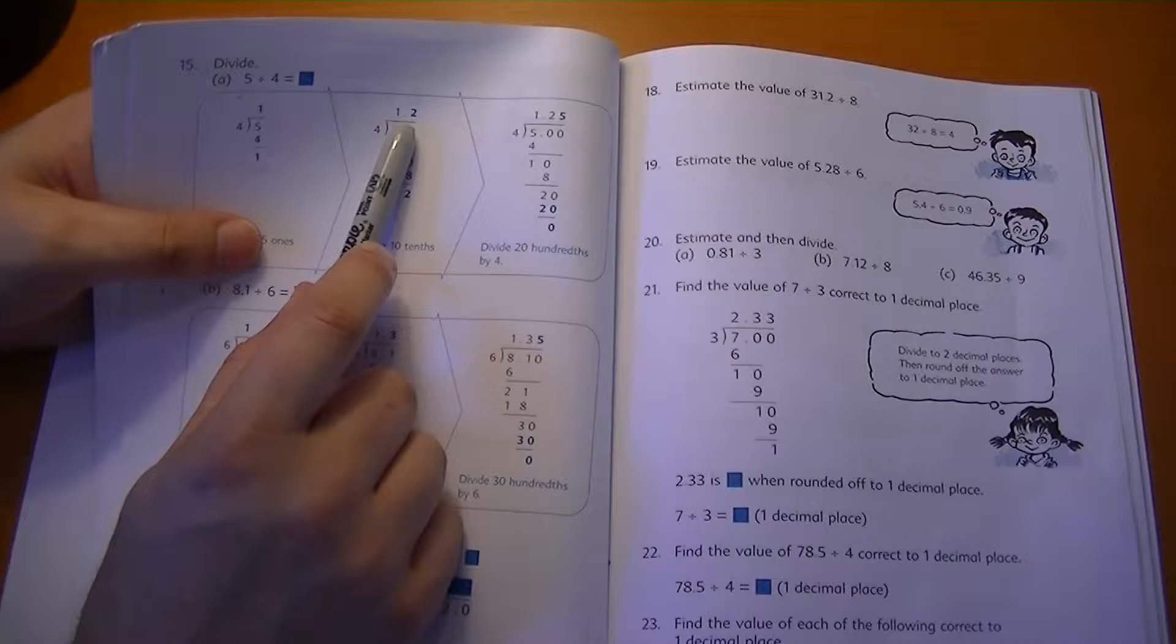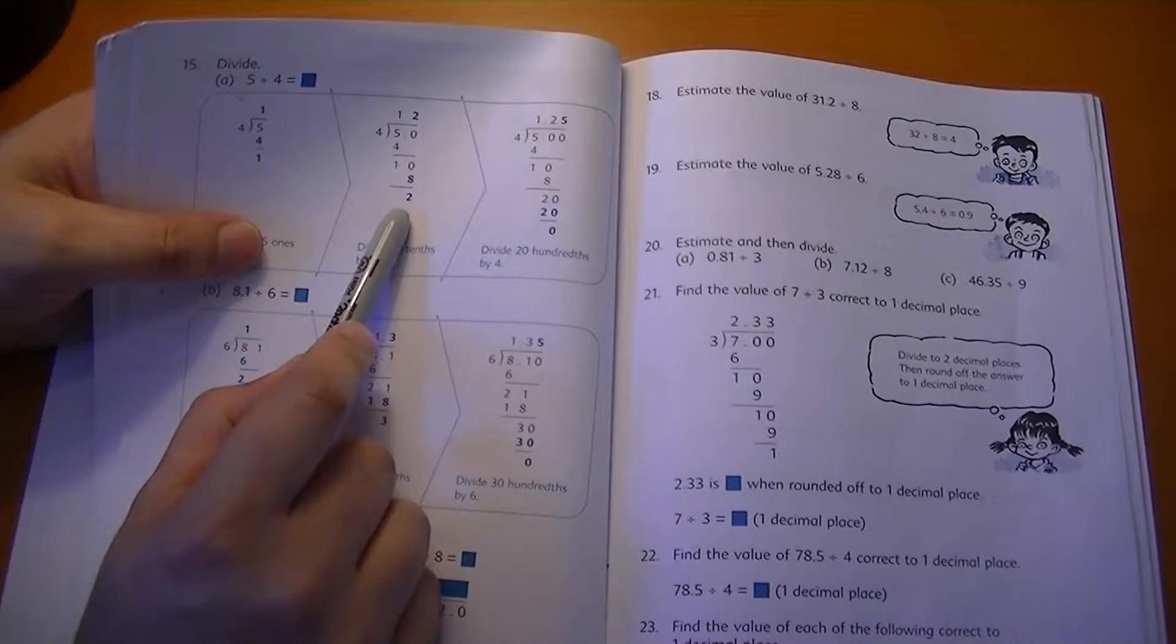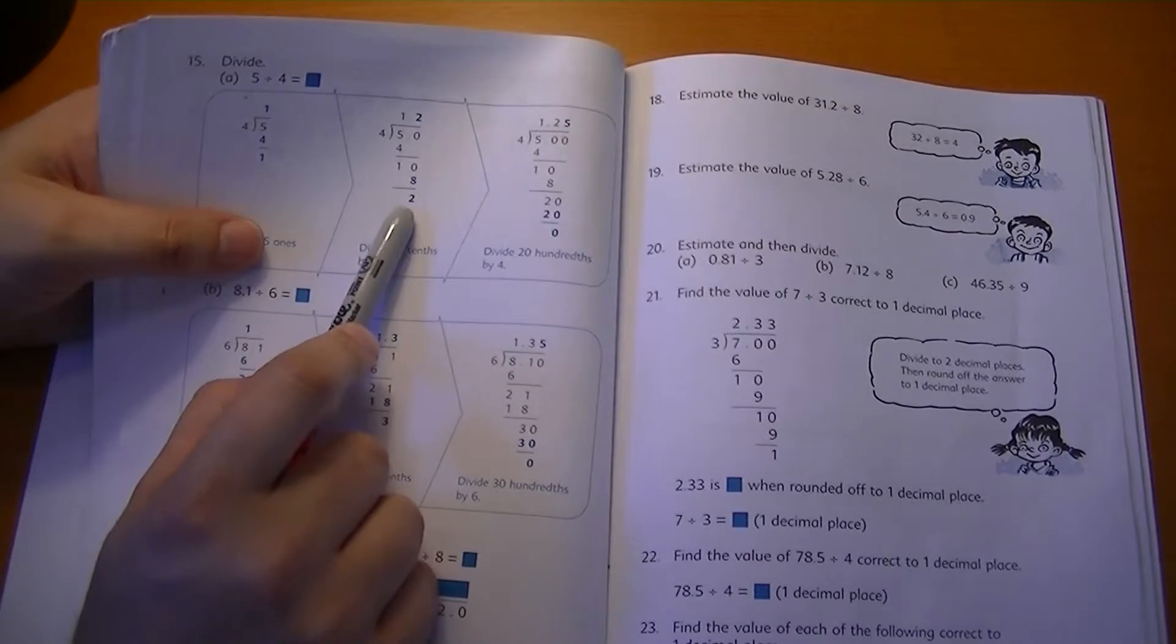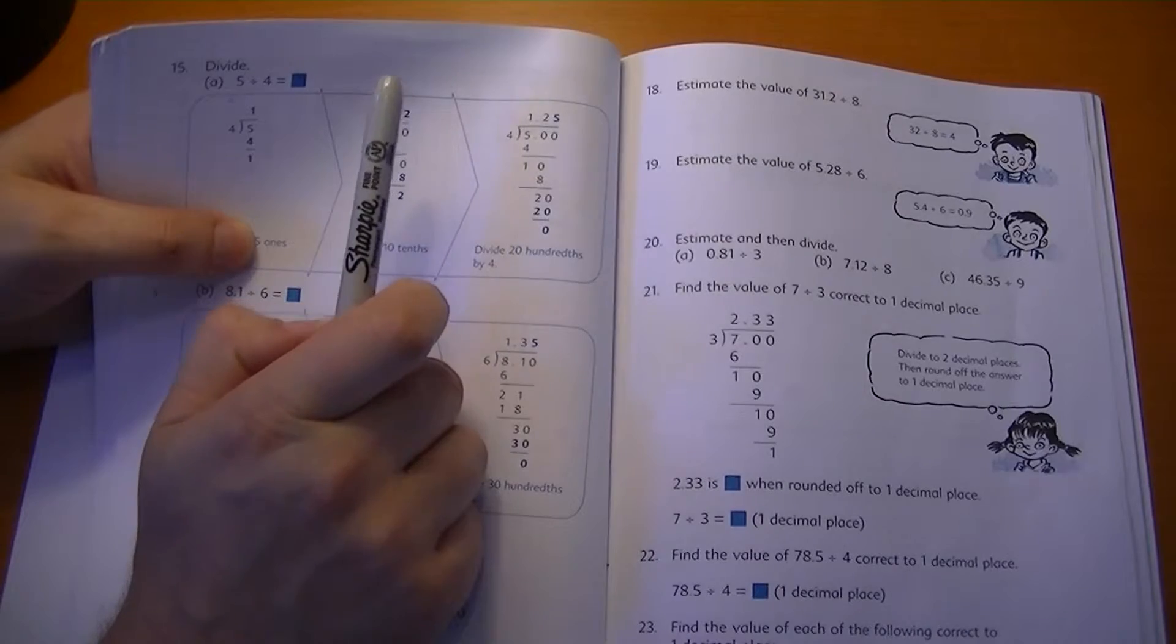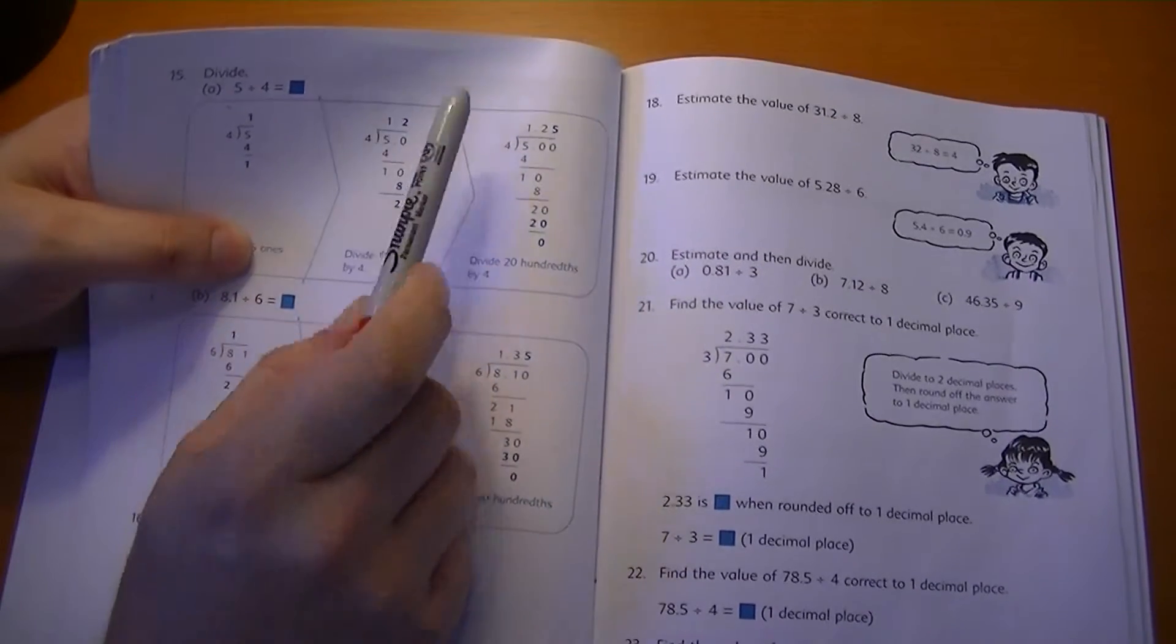How many times does four go into ten? Two times. Two times four is eight. Ten minus eight is two. We still have a remainder so we have to keep going. So add another zero. Is 5.00 the same as five? Yes, it is.